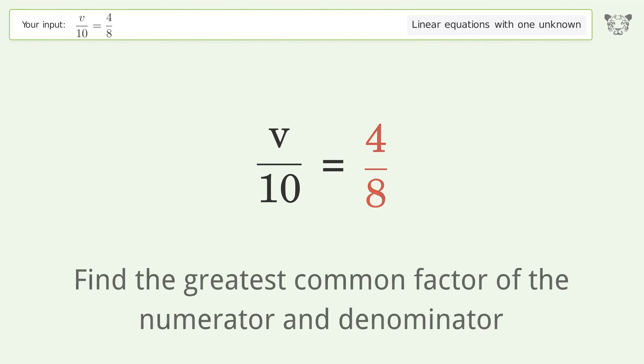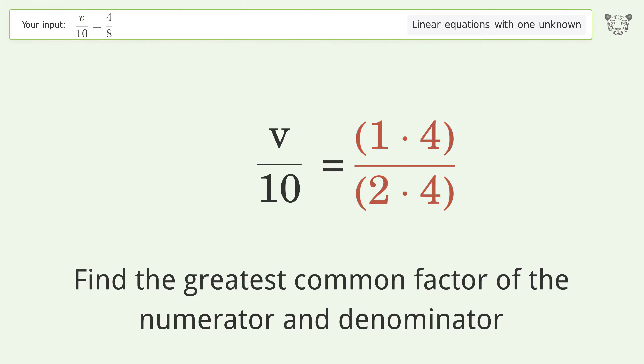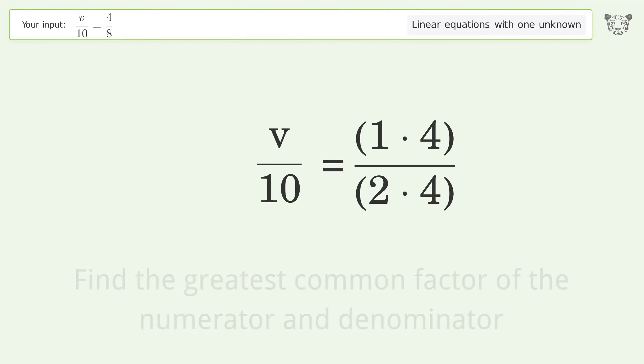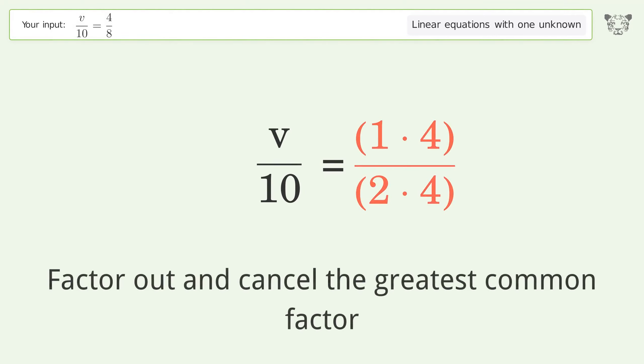Find the greatest common factor of the numerator and denominator. Factor out and cancel the greatest common factor.